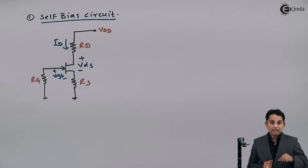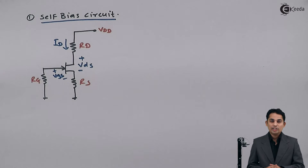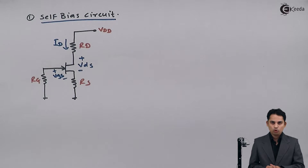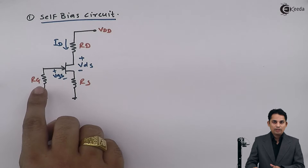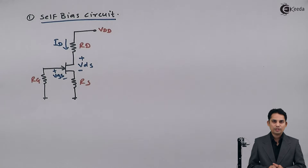Now students, there are different types of biasing methods applied for the JFET, namely self-biased circuit and voltage divider bias circuit. We are going to see the self-biased circuit first. The gate terminal has a resistor called RG and does not consist of any DC battery; hence the circuit is called a self-biased circuit. This is the first circuit introduced for zero temperature drift.